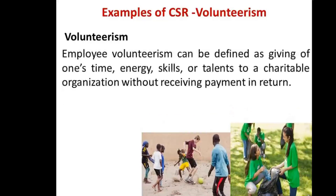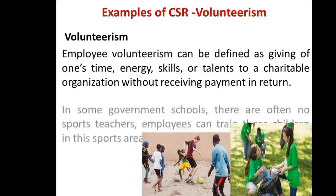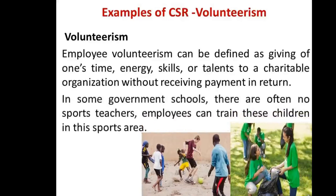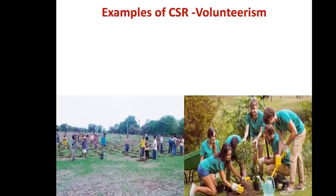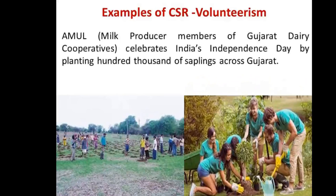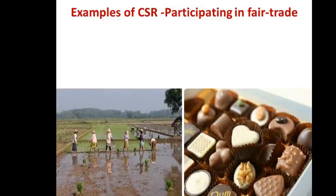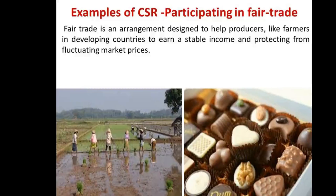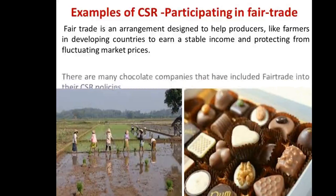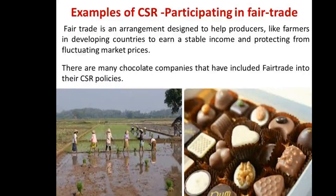The second type is volunteerism. Volunteerism is when employees of the company make free time or after office hours to go and volunteer in places like schools. For example, if a school doesn't have a physical education trainer, employees can help students in sports, or they can plant trees. Amul, a dairy product company from India, is planting thousands of saplings across Gujarat to celebrate India's Independence Day.